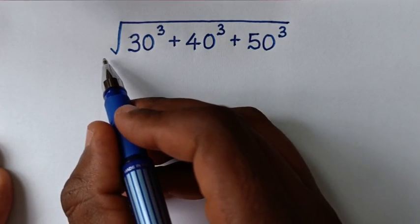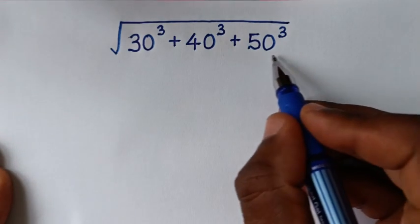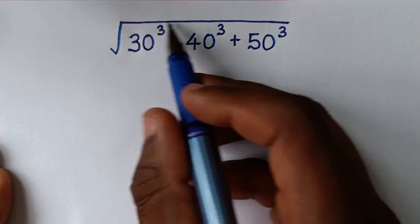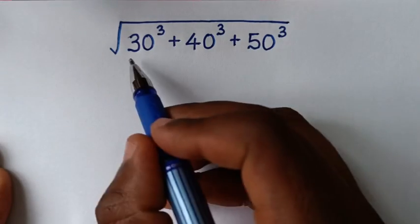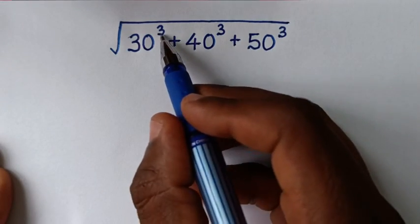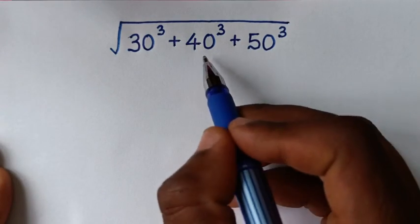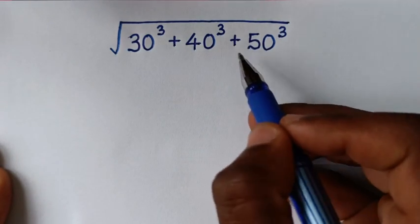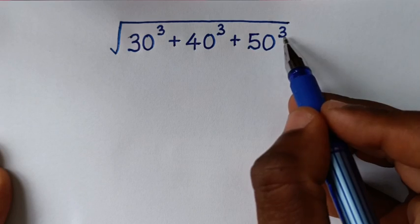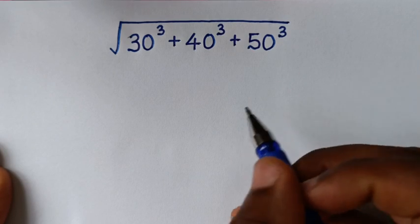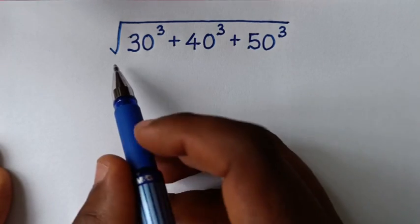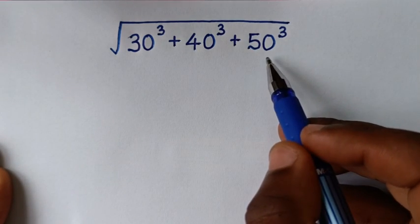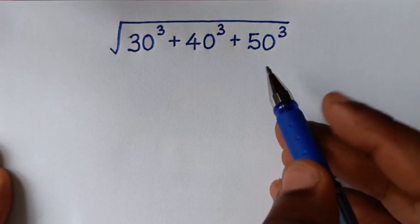Welcome. We are going to solve this math problem: the square root of 30 to the power 3 plus 40 to the power 3 plus 50 to the power 3. To solve this problem we have two methods.